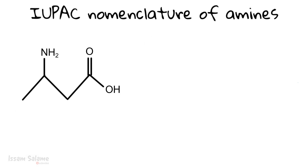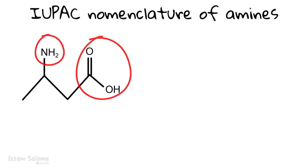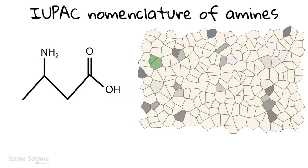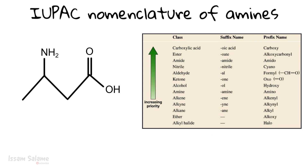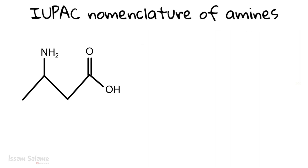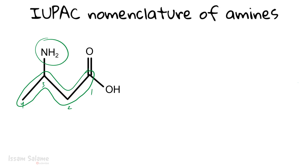How do we name a structure with two functional groups — a carboxyl group and an amino group? We refer to the priority chart of functional groups. As you can see, most functional groups have priority over amines, so here the carboxyl group takes priority. We number the longest chain from the end closer to the carboxyl group: carbon one, two, three, and four. The amino group is named as a substituent, giving us 3-aminobutanoic acid.